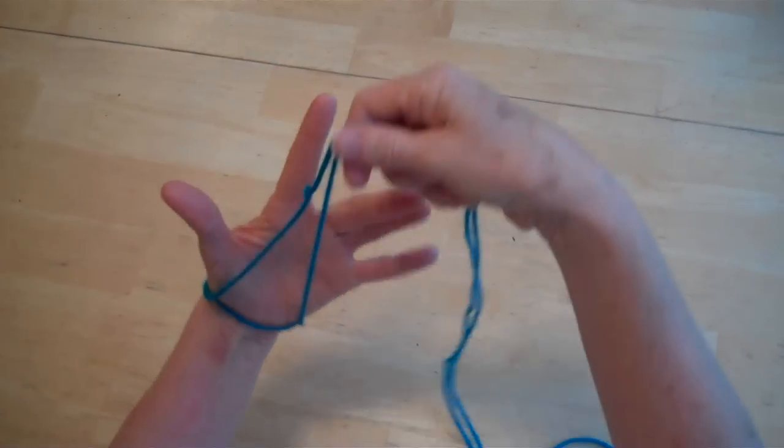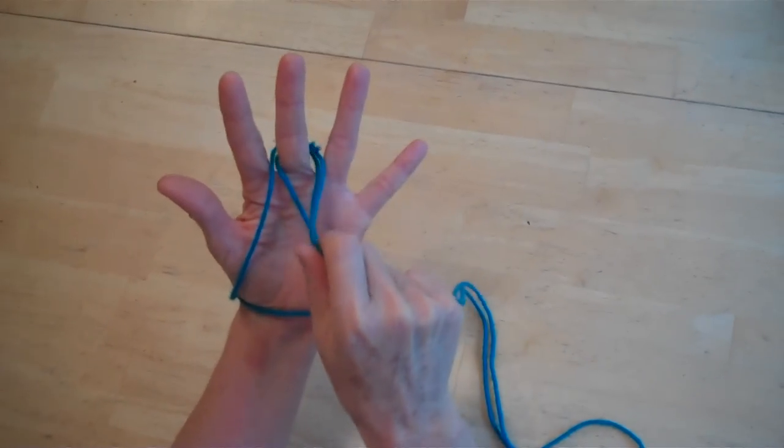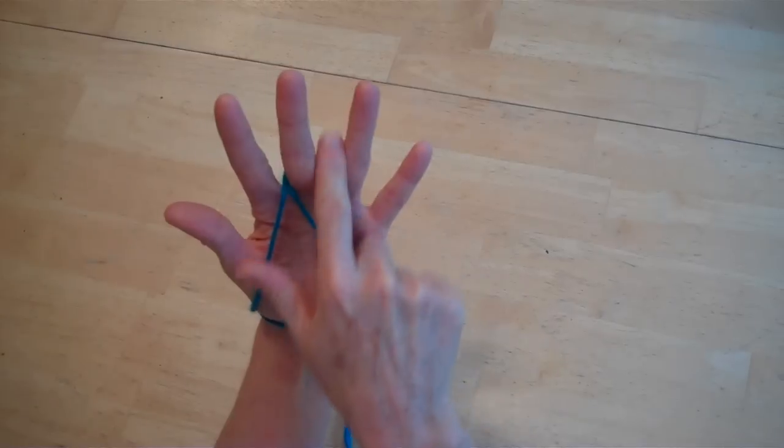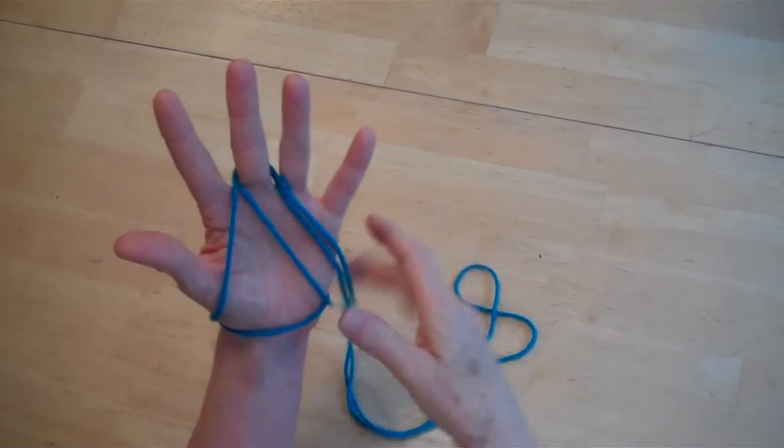Take this part that's hanging and bring it up between your pointer and your middle finger, then back down around your middle finger, between your ring finger and your middle finger here. The rest of this is just hanging down.